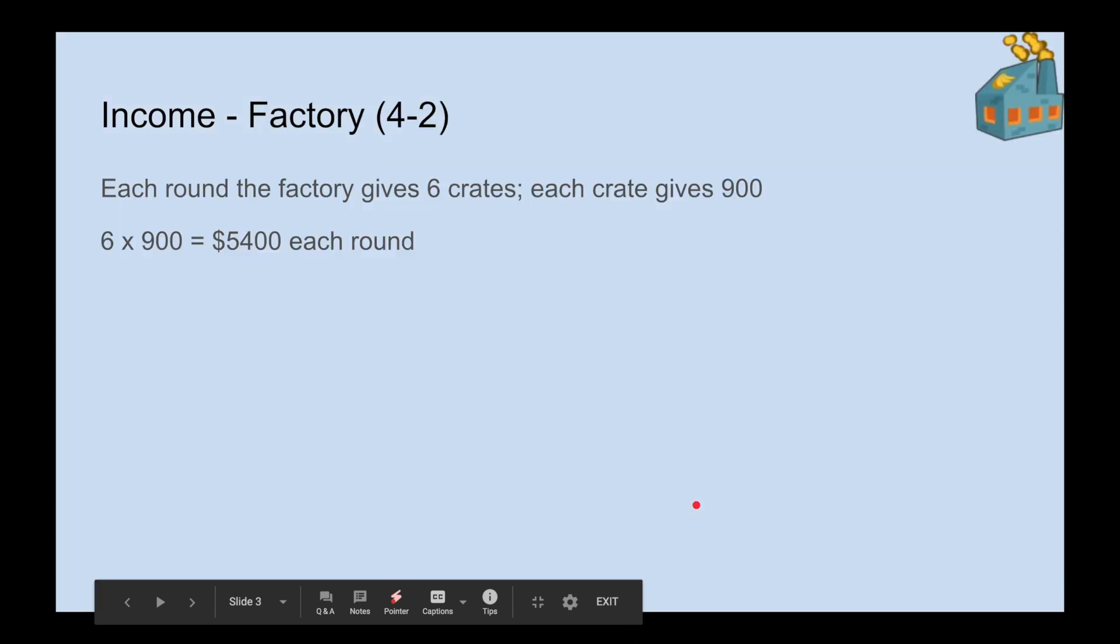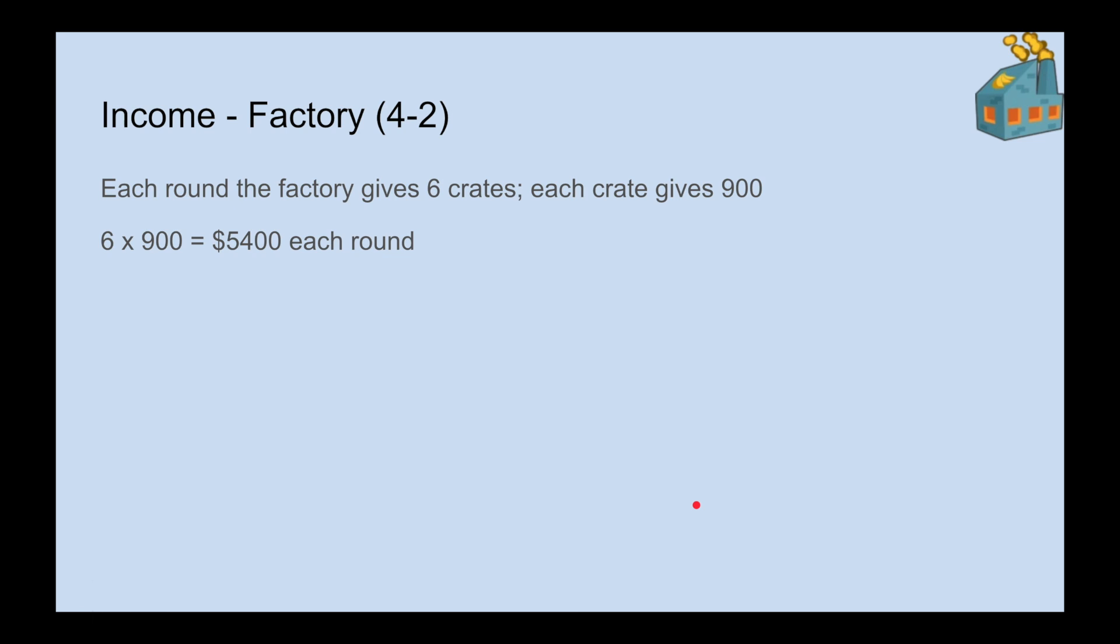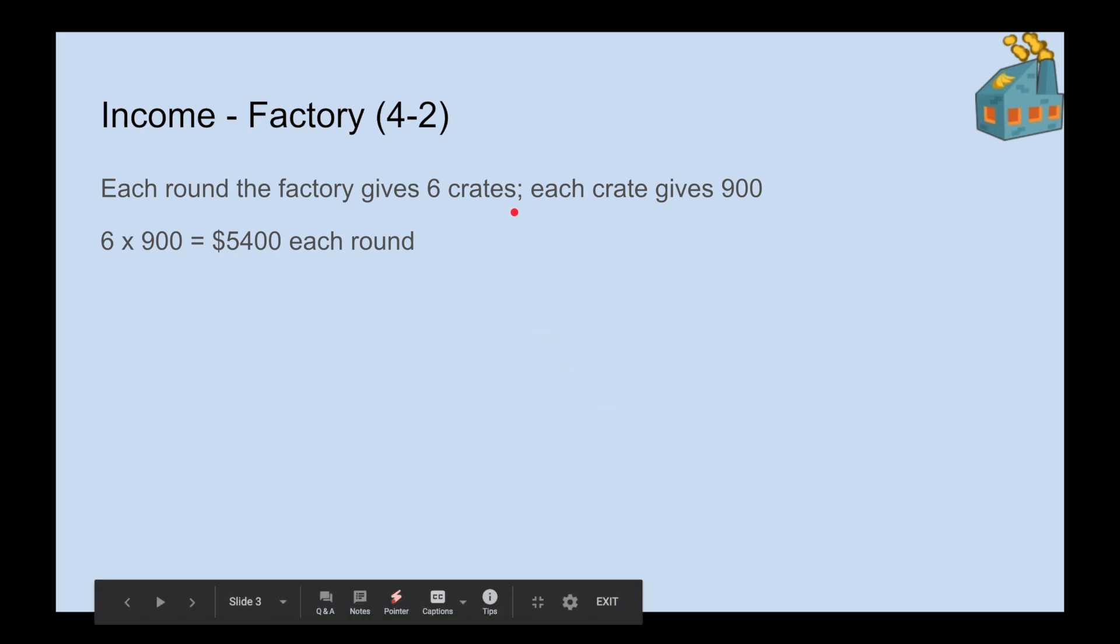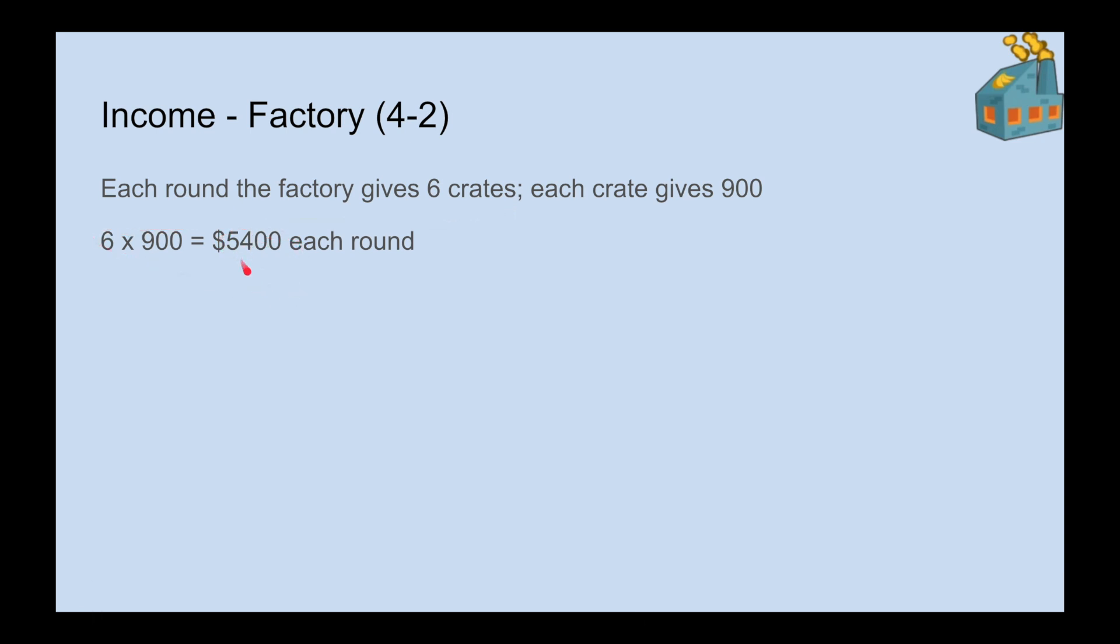But on the factory, on the other hand, each round the factory gives you 6 crates. Each crate is worth $900, basically meaning the factory always gives you $5400 each round, which you can directly spend on whatever you want without hurting the profits you're going to get in the next round.